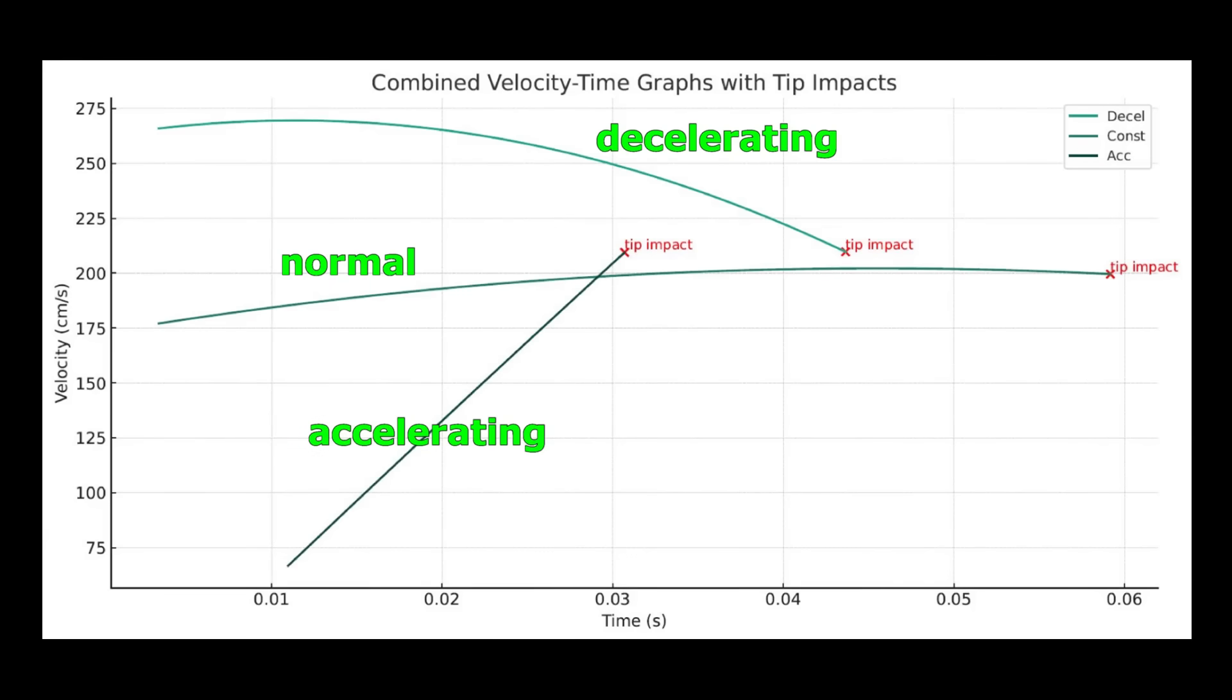Here are the plots showing how the cue speed varied with time for each of the three strokes. You can clearly see the increasing speed before contact with the accelerating stroke and the decreasing speed with the decelerating stroke. The normal stroke cue speed was slightly slower at contact, but the accelerating and decelerating speeds at contact were almost identical.